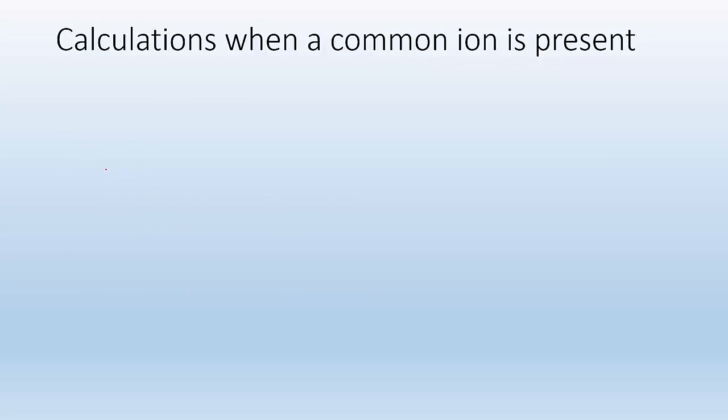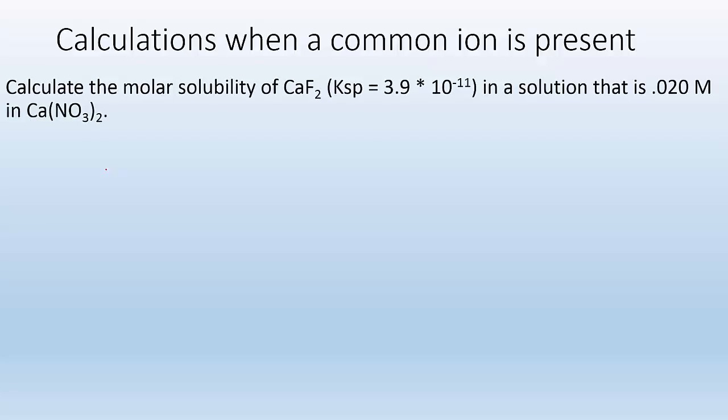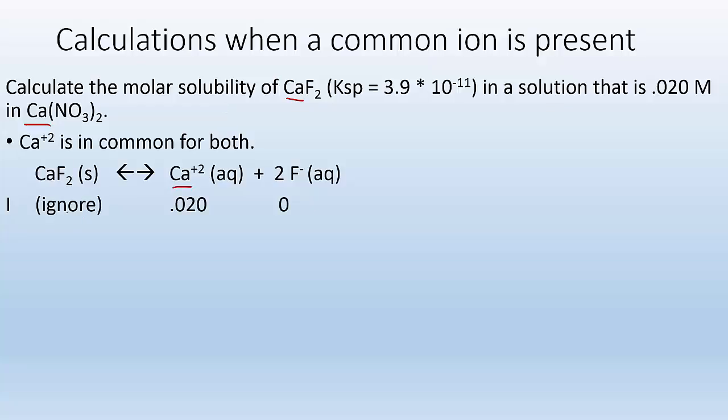Okay, so calculations when the common ion is present. So it says calculate the molar solubility of calcium fluoride in a solution that is 0.02 molar of calcium nitrate. Well, it's saying that calcium plus 2 ion is common for both. So that is our common ion. Right, so if calcium fluoride breaks up into calcium plus 2 and fluoride ion, we can ignore the CaF2 because it's a solid. We're going to make an icebox.